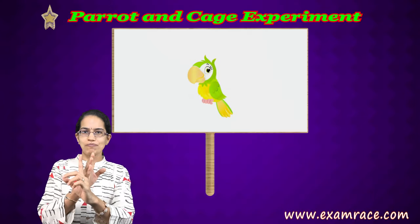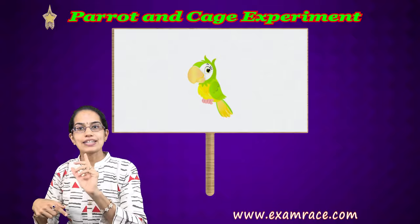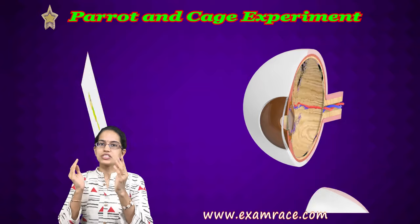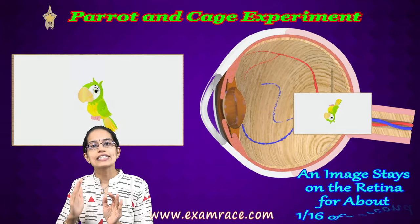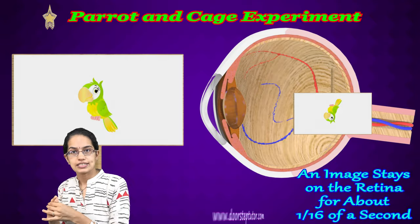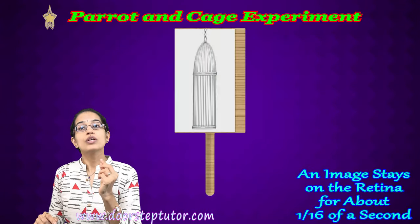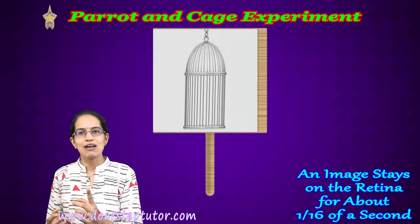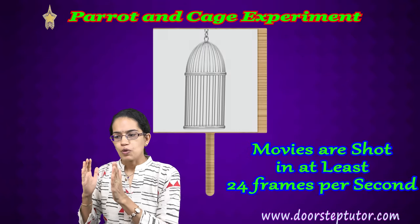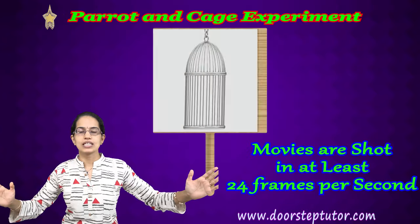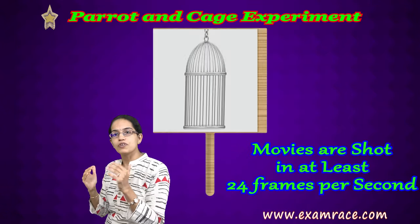The parrot and cage experiment: on one side of a stick we have a parrot, on the other side a cage. When the stick is rotated, it appears as if the parrot is inside the cage. This happens because of the motion being trapped in our eyes — the image formed on our retina does not vanish immediately; it remains for 1/16th of a second. If the frames are faster than 1/16th of a second, it appears as a continuous movie. If slowed down, the parrot and cage appear separate. This is why movies require at least 24 pictures per second to create a continuum.